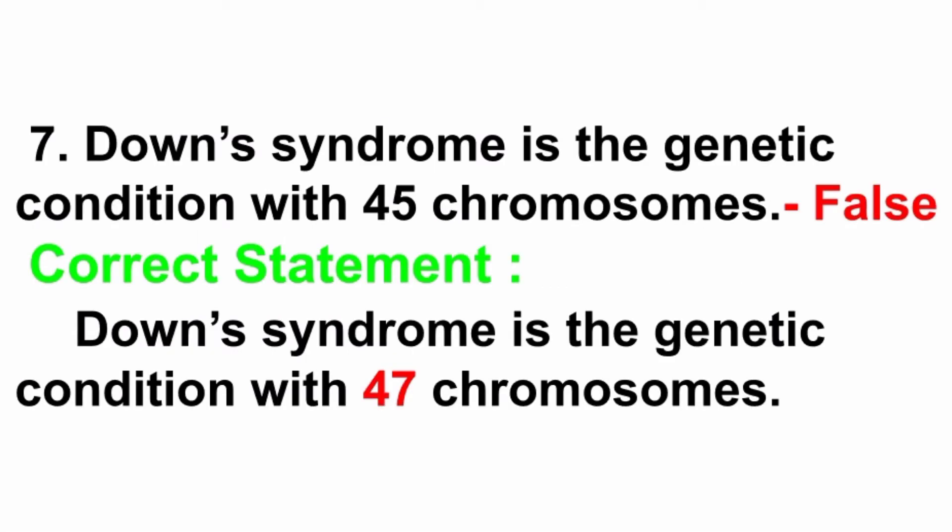Seventh question: Down syndrome is the genetic condition with 45 chromosomes. Answer is false. The correct statement is: Down syndrome is the genetic condition with 47 chromosomes, because human beings already have 46 chromosomes, and in Down syndrome one extra chromosome is added at the 21st chromosome, making a total of 47.